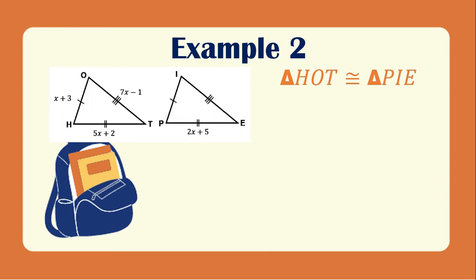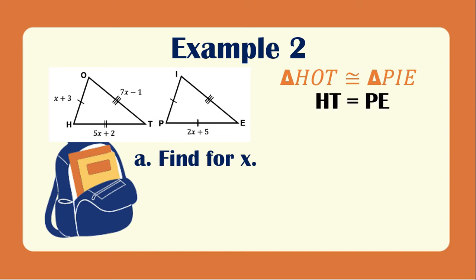Let's have example number 2. Using these two triangles, we know that triangle HOT is congruent to triangle PIE. Using what postulate? We can use the SSS postulate. First, we need to find X. Since HT equals PE, we can equate them. So we have HT, which is 5X plus 2, equals PE, which is 2X plus 5.